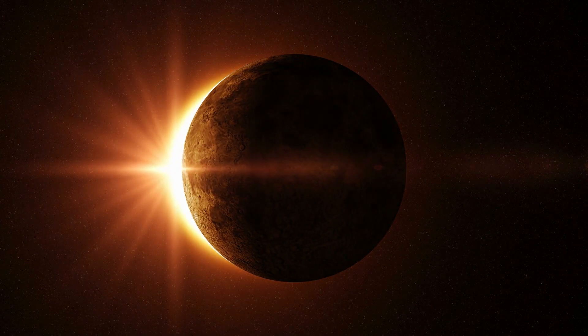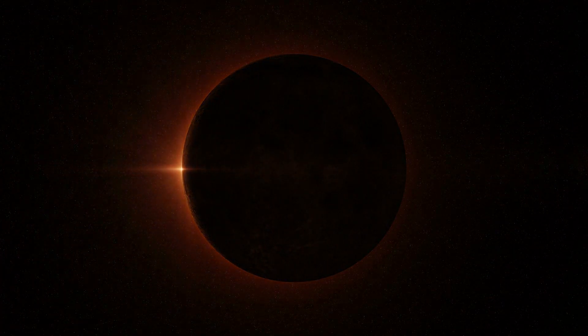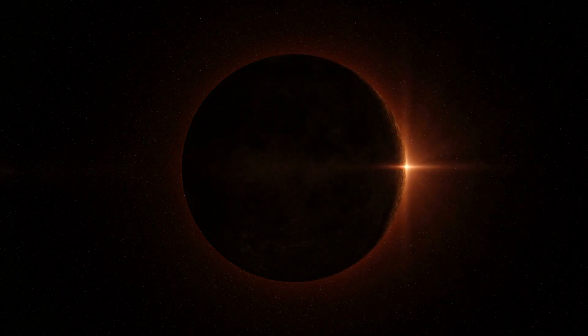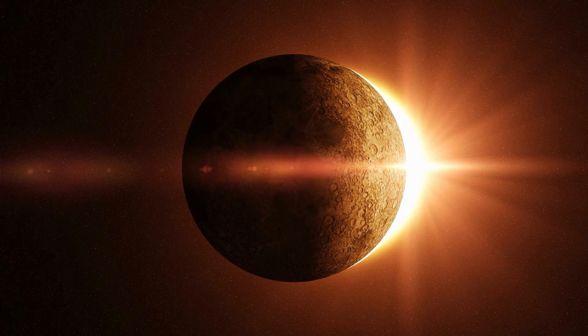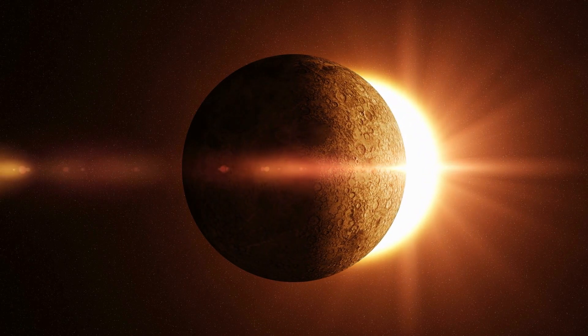The photosphere blocks out light from the corona, so you can't see it from Earth until the Moon completely blocks out the Sun. This only occurs during a total solar eclipse. Using specialized equipment, scientists may get the same result.